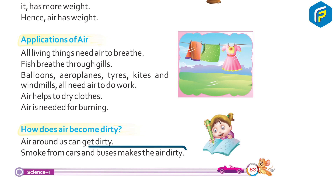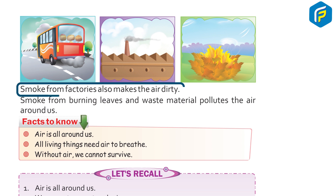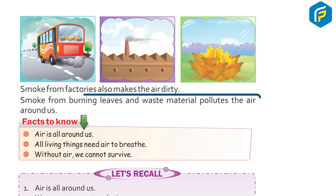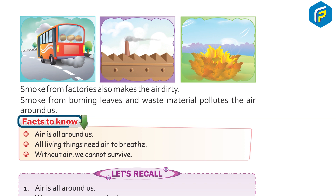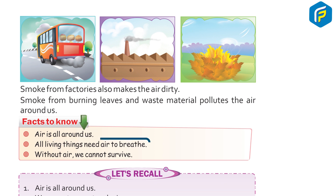How does air become dirty? Air around us can get dirty. Smoke from cars and buses makes the air dirty. Smoke from factories also makes the air dirty. Smoke from burning leaves and waste material pollutes the air around us.